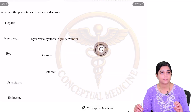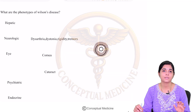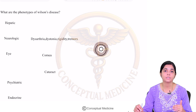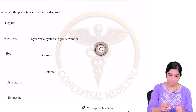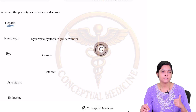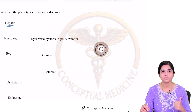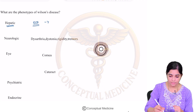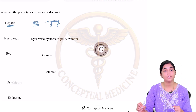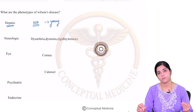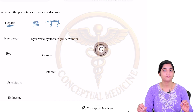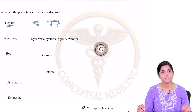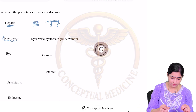What are the phenotypes of Wilson's disease? Wilson's disease can present in different forms. The most important is the hepatic form — as the name suggests, there will be involvement of the liver, resulting in chronic liver disease which usually occurs in young individuals. Any young individual less than 40 years of age presenting with chronic liver disease where you have not found the cause — please evaluate for Wilson's disease. Then there are also neurologic manifestations.